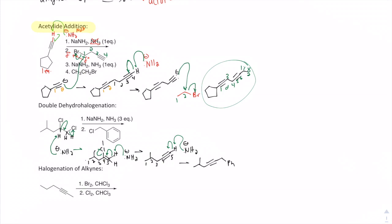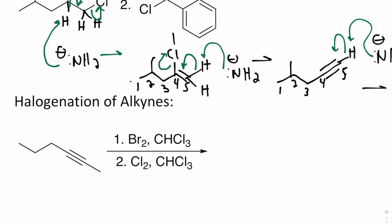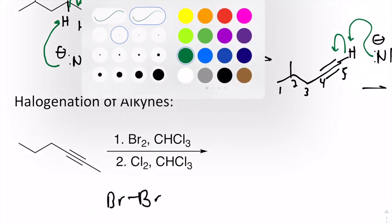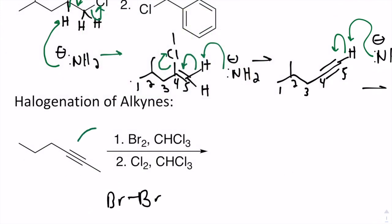The next reaction is halogenation of alkynes, which mimics the exact same reaction we saw with alkenes. In step one, we form a bromine bridge. Mechanistically, one of the pi bonds from the alkyne grabs the bromine from Br2, facilitating the removal of the other bromine in a concerted manner — forming the bromine bridge intermediate.